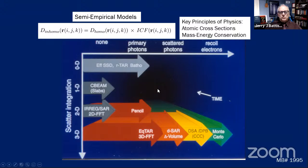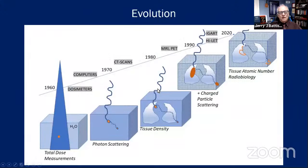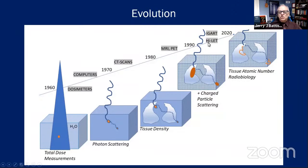Calculation times were basically weeks for running a treatment plan. Moving forward from water tank measurements in the 1960s, we corrected for tissue density in the 1980s with CT scans, then added charged particle scattering. Looking ahead, we may add atomic number effects, radiobiological modeling, and hopefully one day a very economical carbon beam — that would be my dream.